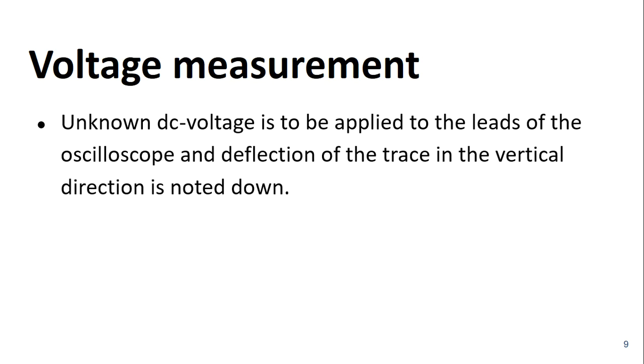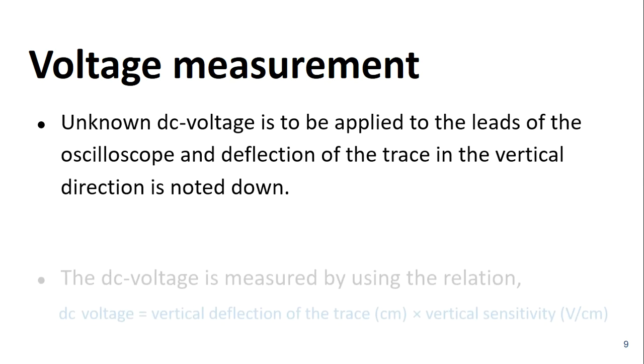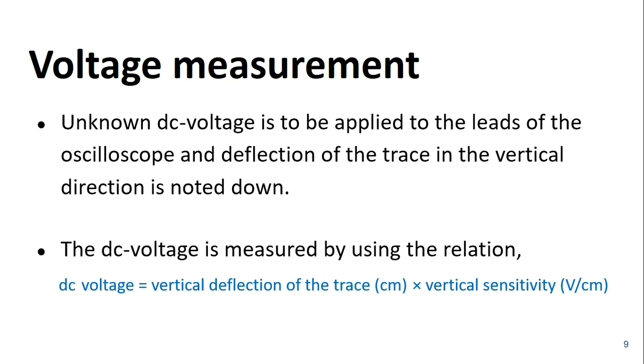Since the deflection on the screen of a CRO is directly proportional to the voltage applied to the deflecting plates, hence by reading the scale, the amount of deflection produced is determined and it is multiplied by deflection sensitivity that gives the value of the DC voltage. Here the deflection sensitivity is the shift of the spot of light on the screen per unit change in voltage across the deflection plates. The DC voltage is measured by using the relation: DC voltage equals vertical deflection of the trace multiplied by voltage sensitivity.